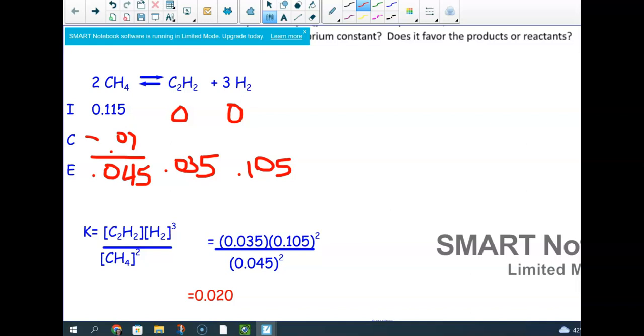So the last part of it, does it favor the products or the reactants? So I think you can kind of tell, I mean, it's less than one. What did we say? What happens if it is less than one? It's going to favor the reactants, isn't it? So thank you for noting my boo-boo.